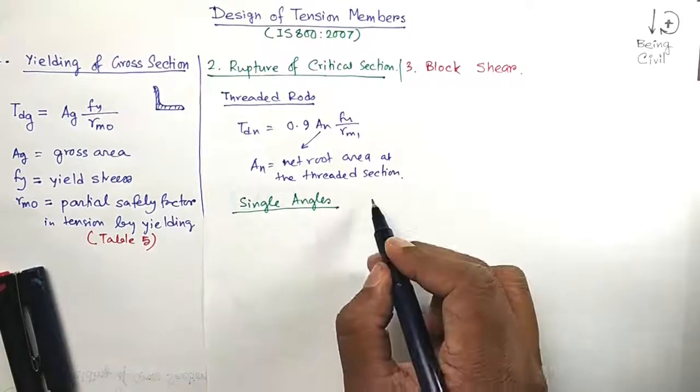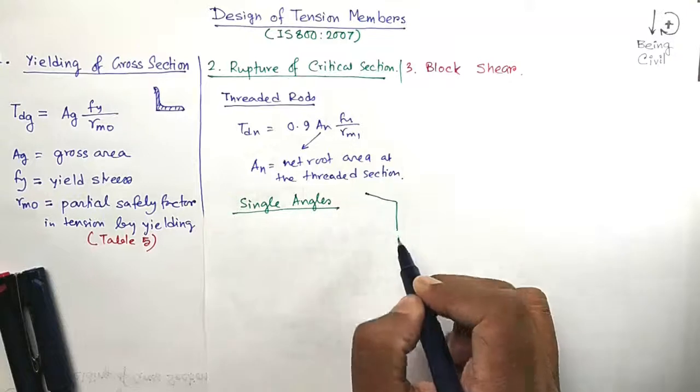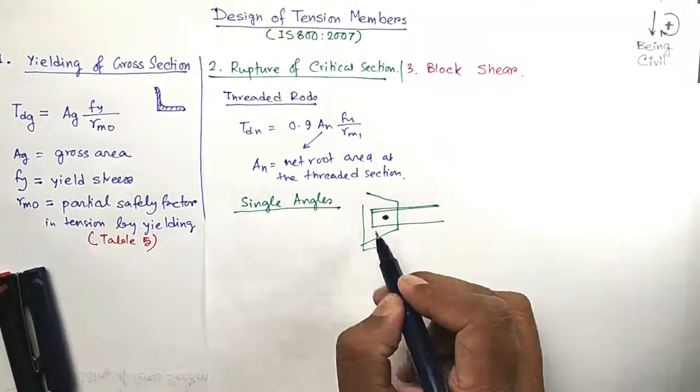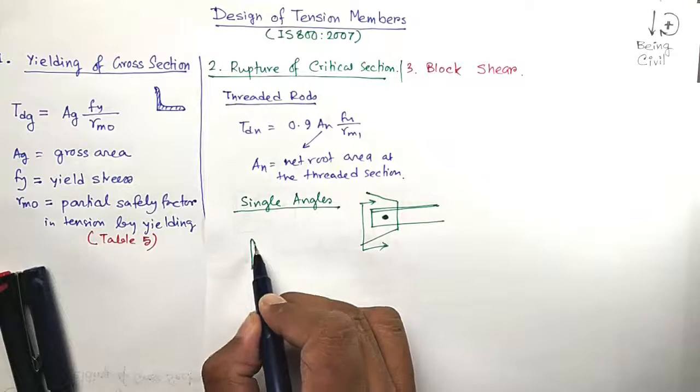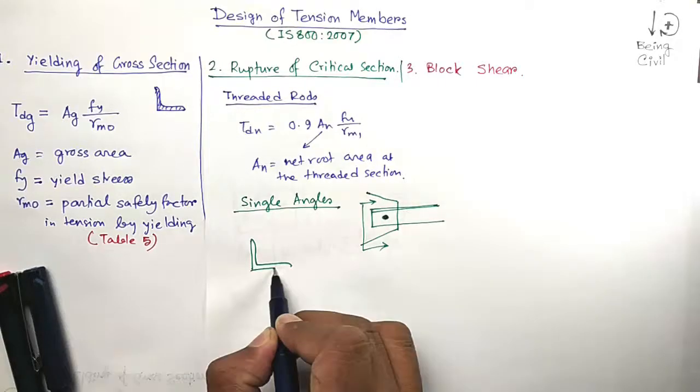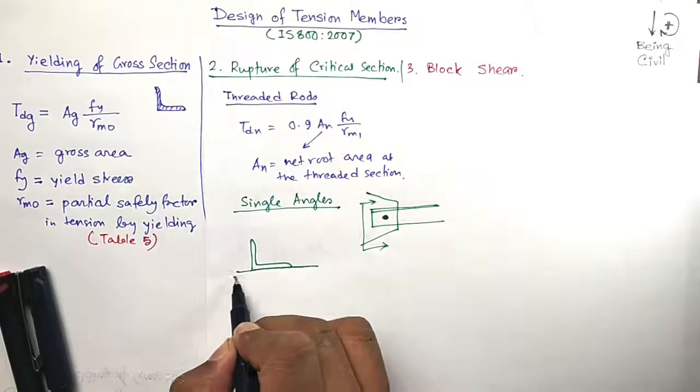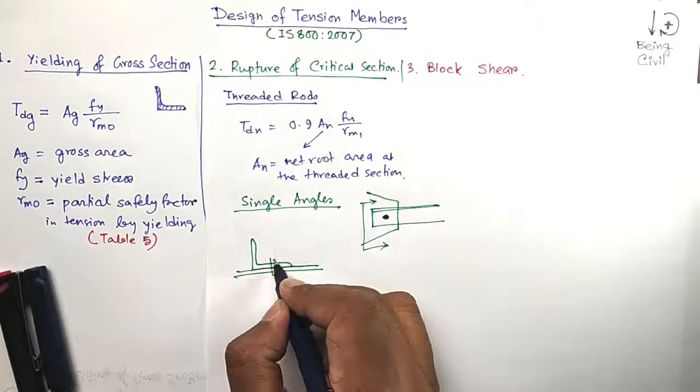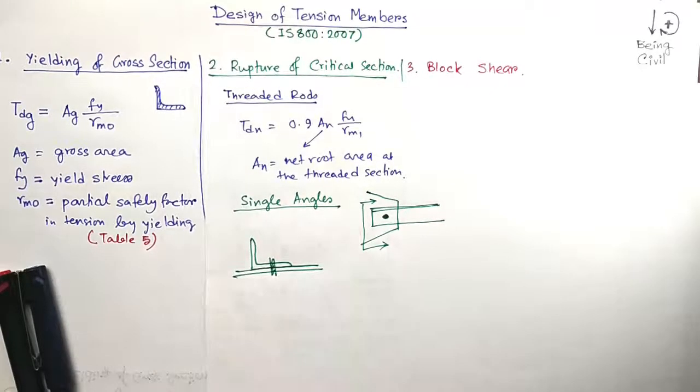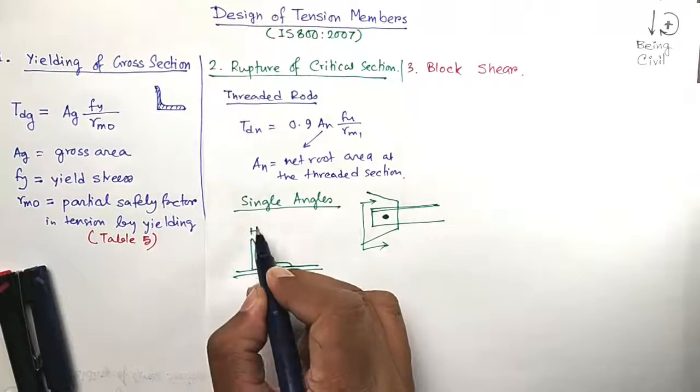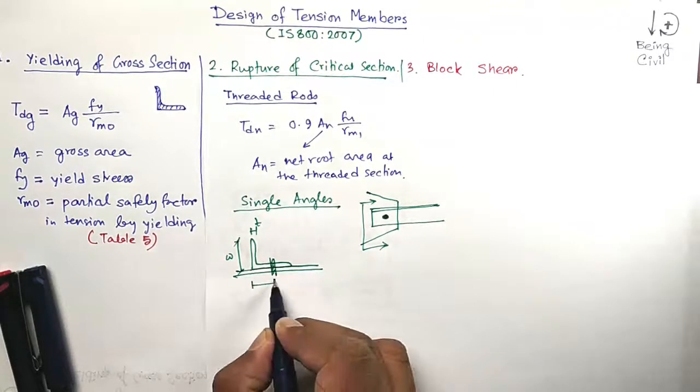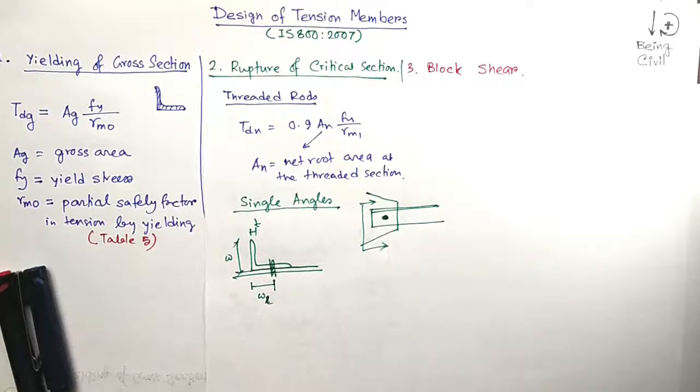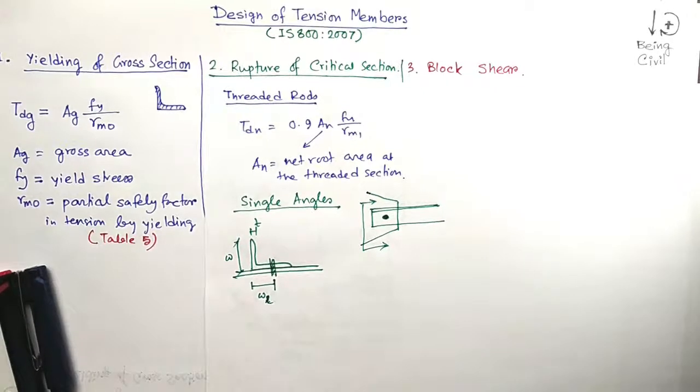Now, coming to single angles. Single angles can be connected to a gusset plate like this. You will get this is the single angle connected like this. This is the thickness T, this is the length W, this distance is called WL, and this is the bolt gauge distance.